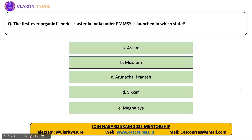The first question: the first ever organic fisheries cluster in India under Pradhan Mantri Matsya Sampada Yojana is launched in which state? This organic cluster has been launched in the first organic agriculture state of India, that is Sikkim, and it's launched in Soreng district of Sikkim.